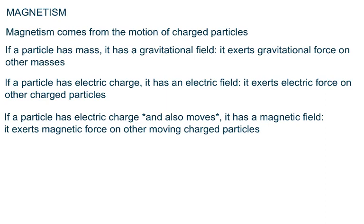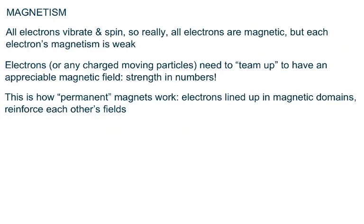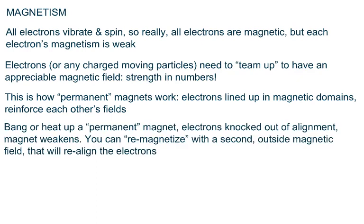Each individual electron is a magnet, but it's really weak — it's a tiny electron. However, if you get a lot of electrons moving in the same direction, or get a bunch of spinning, vibrating electrons and line them up, you have a much larger magnetic domain and a much stronger magnetic field. This is how permanent magnets work — the electrons are all lined up in magnetic domains, reinforcing each other's field.